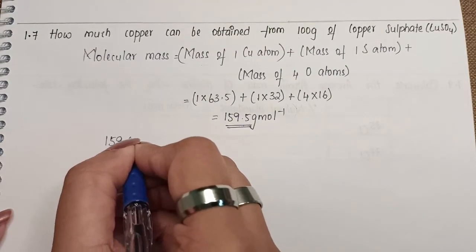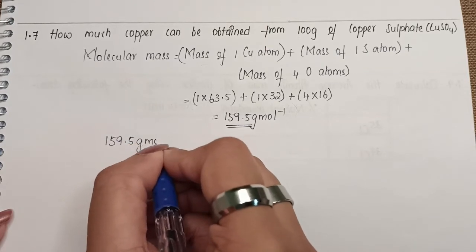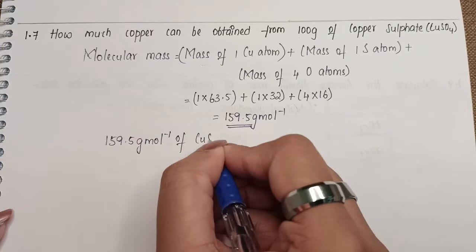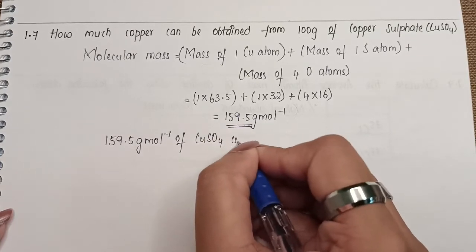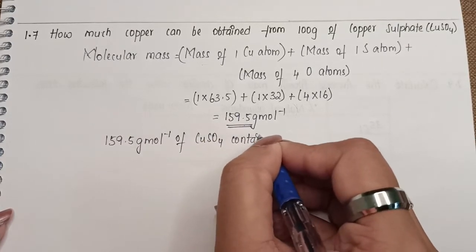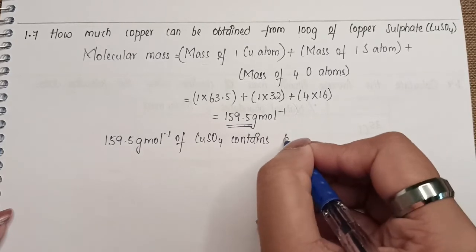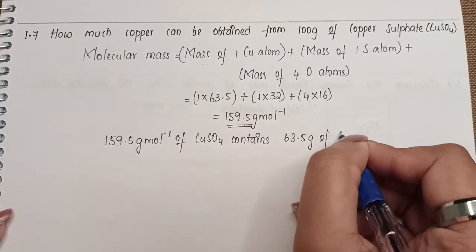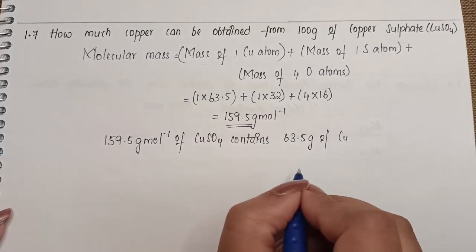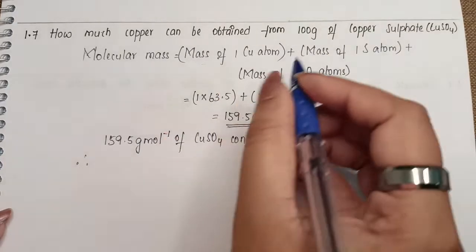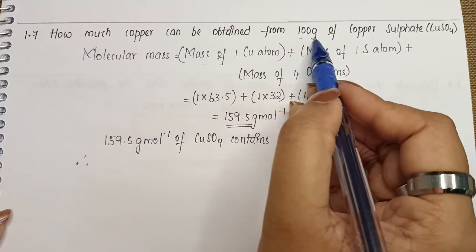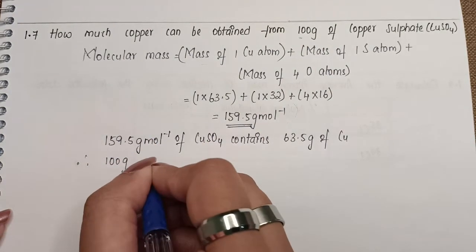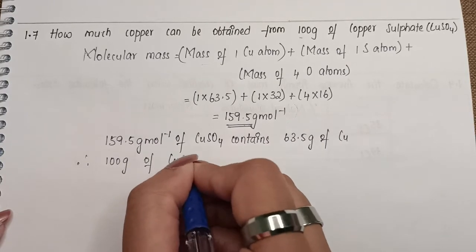So here we'll write: 159.5 gram per mole of copper sulphate contains 63.5 grams of copper. So 100 grams of copper sulphate contains x, and that is what we're going to find out.